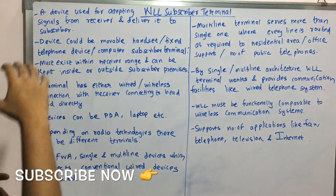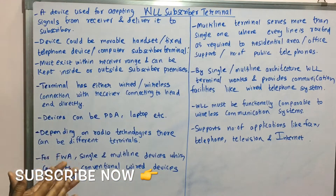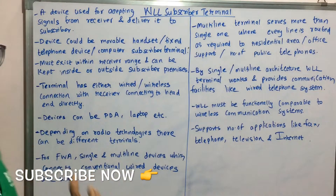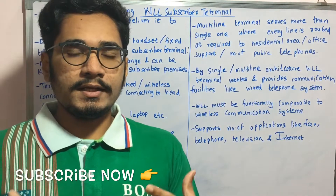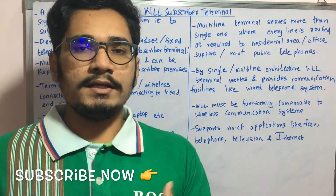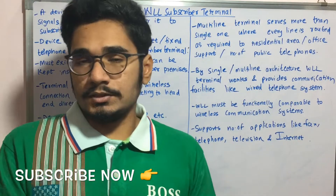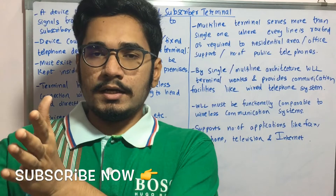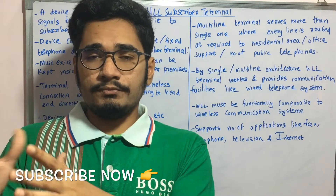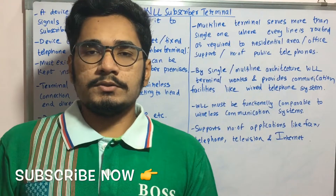The subscriber terminal must exist within a particular subscriber receiver range and can be kept inside or outside the subscriber premises. For example, in Indian stores or shops, a supermarket may have a telephone setup where you can insert a coin and make a call.